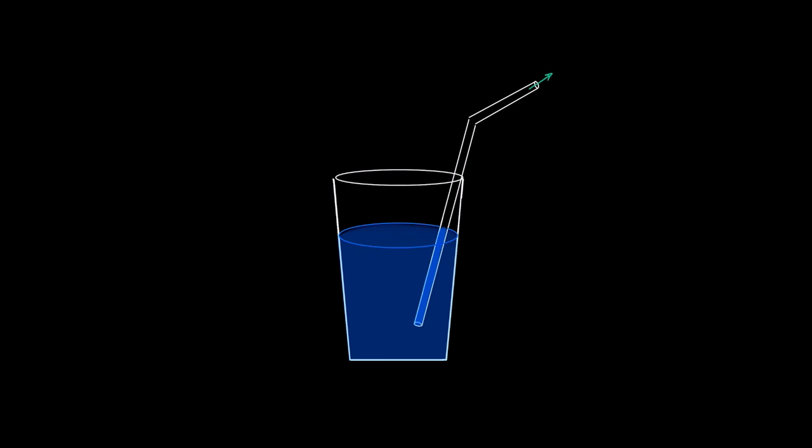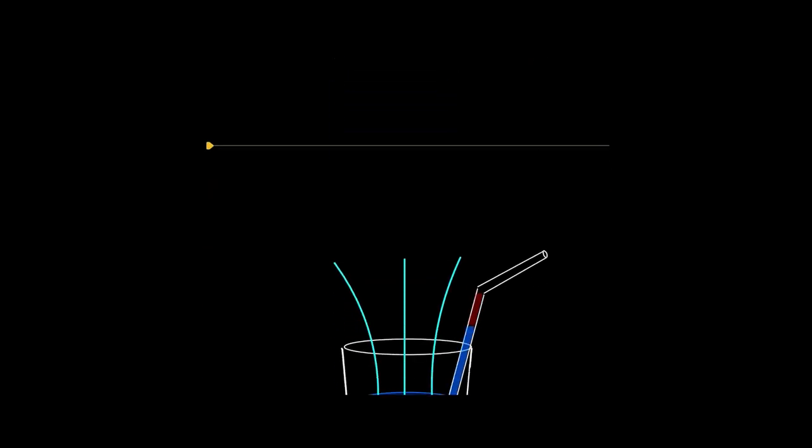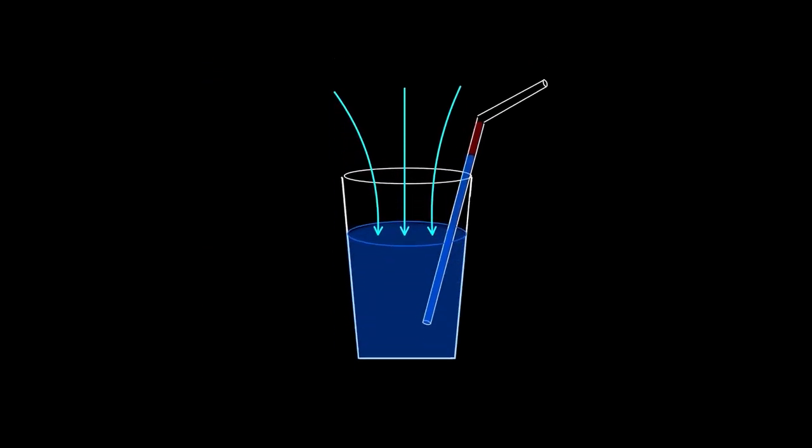Now when you start sucking on the straw what you are doing is making a low pressure area here in the straw. Now the atmospheric pressure on the liquid starts working and propels the water to the low pressure area into the straw and eventually to your mouth.